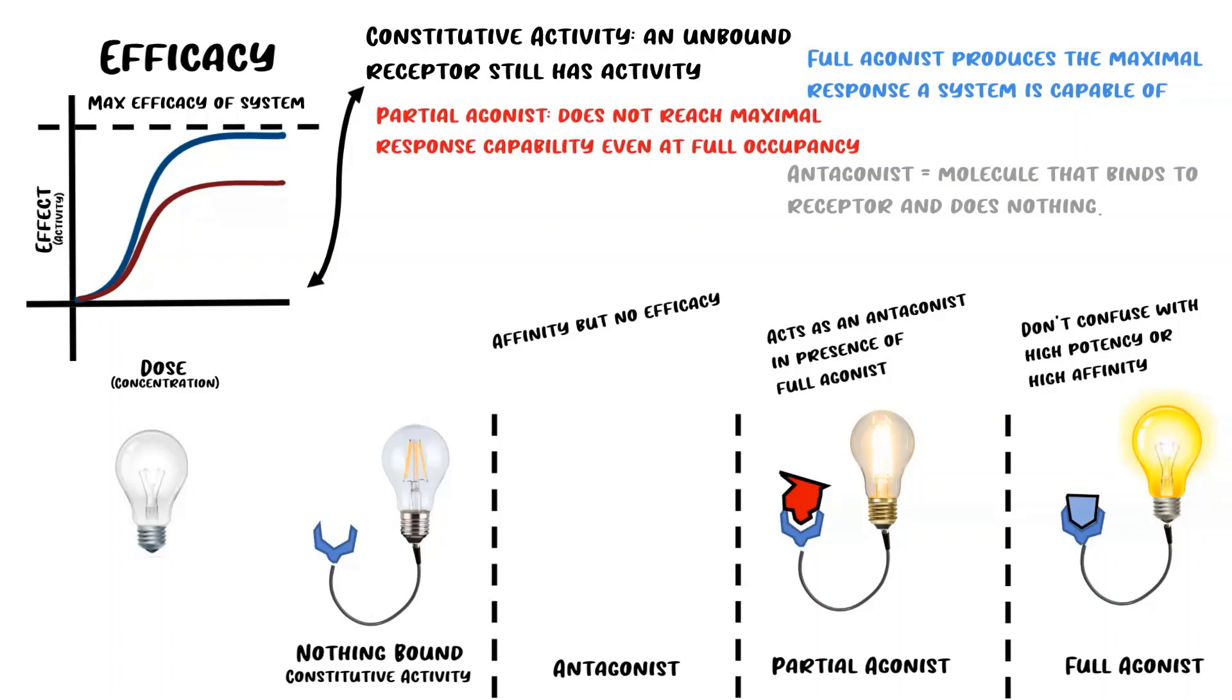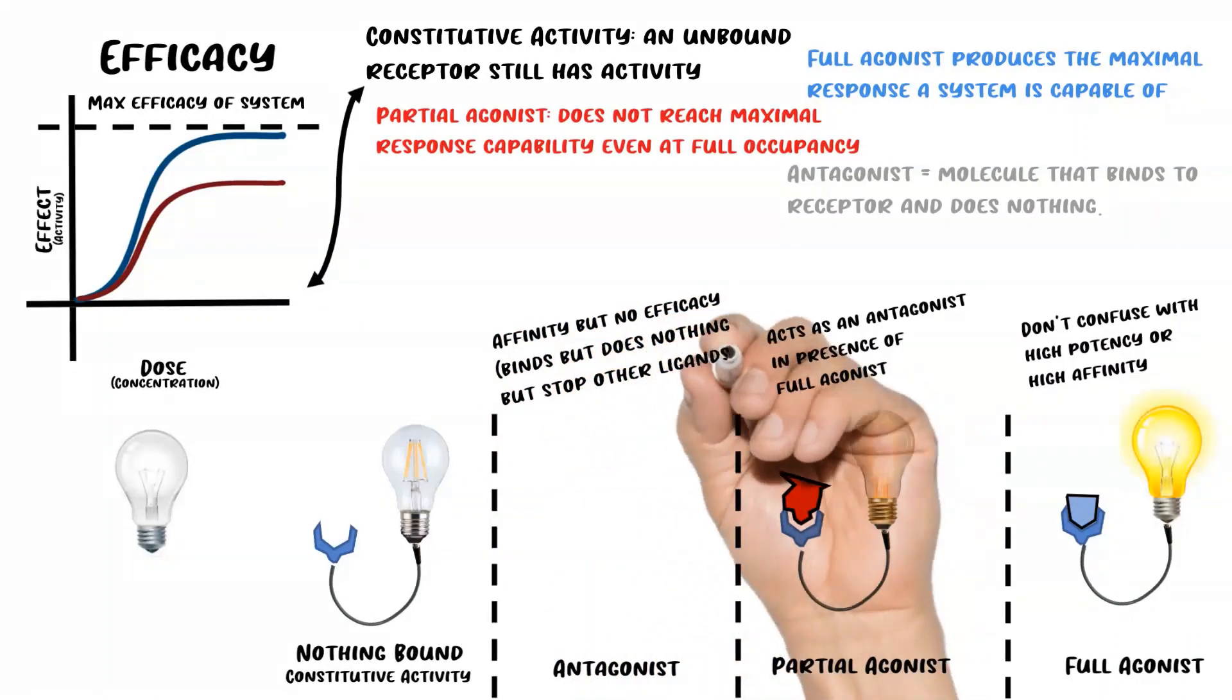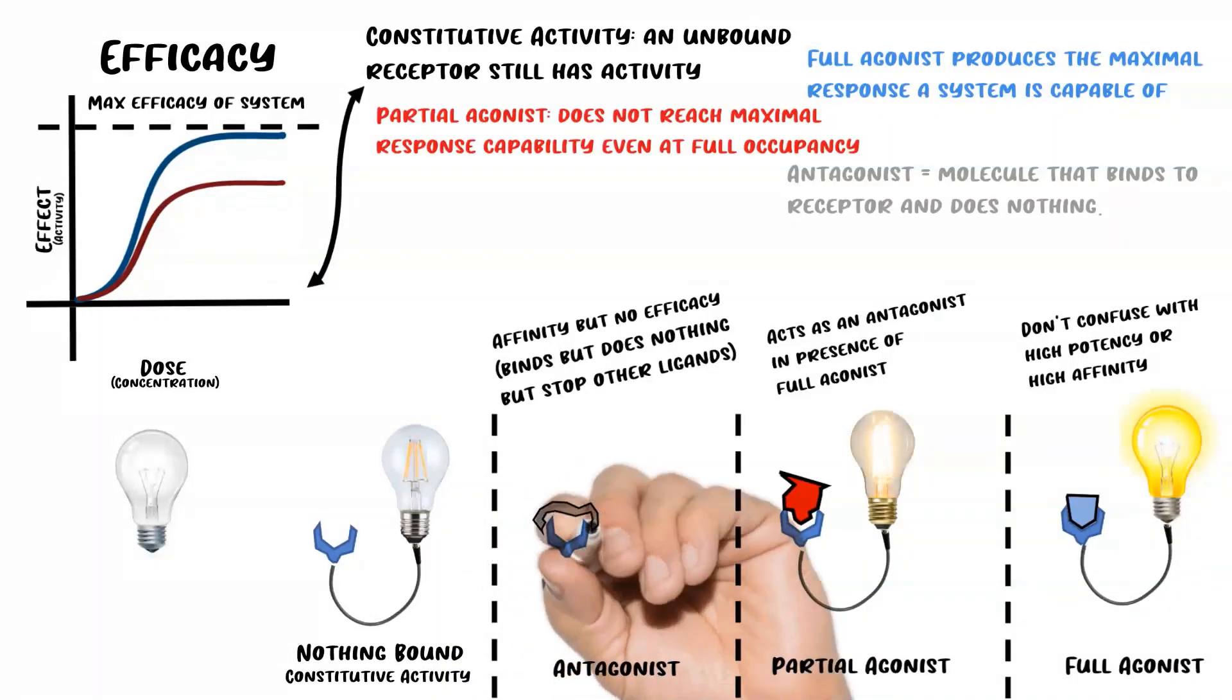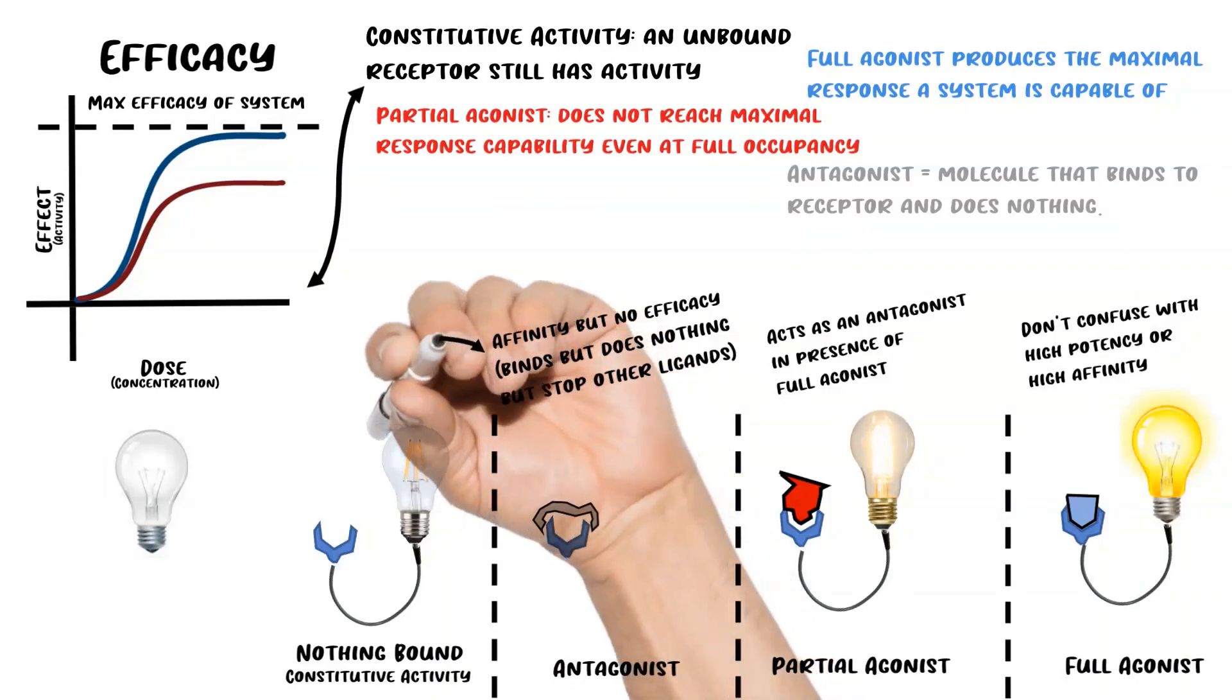What they do is they either block the main sites so that another agonist or partial agonist can't bind, or they bind to what's called an allosteric site—which just means a site different from the active site—and make it so that another agonist or partial agonist can't bind. Overall, antagonists return the receptor back to the state of when nothing is bound.